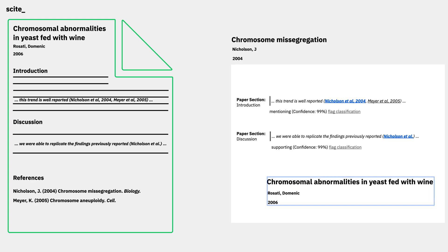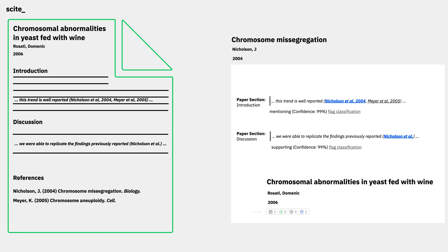Metadata about the source paper lets you see its name, authors, publication year, and more. There is also a badge indicating how many times the source paper itself has been supported, mentioned, or contrasted by other publications in the literature.